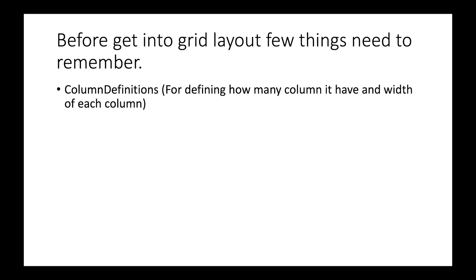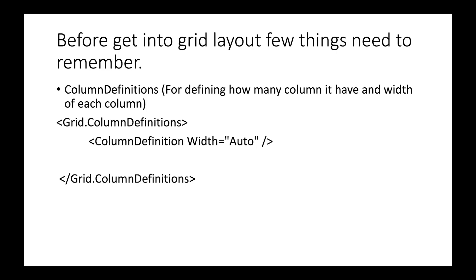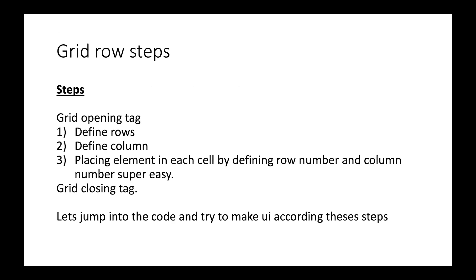Next is column definition, where you define how many columns each row has and the width of each column. The 'auto' property means the column width depends on the width of its content. A width of star means all available space belongs to that column. You define rows in row definition and columns in column definition.